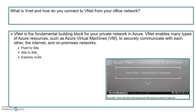Point-to-site is used when two or three machines from your office need to access your Azure VNet. If your entire office needs to access the Azure VNet, site-to-site is more appropriate. ExpressRoute is used when you want an exclusive, dedicated internet channel rather than going through the public internet. It is configured with the help of various carriers suggested by Azure.